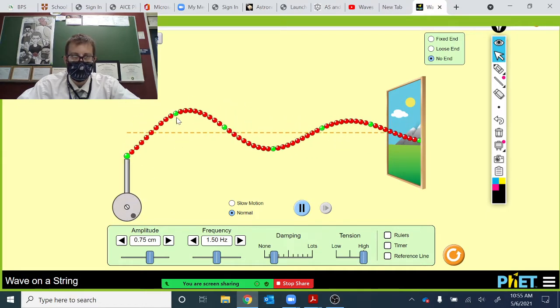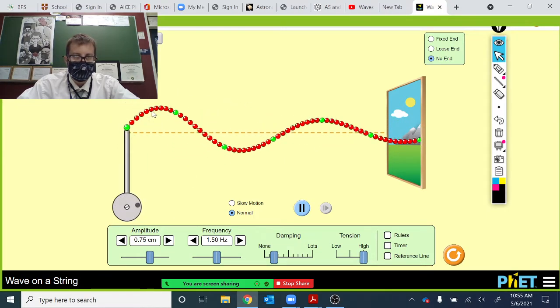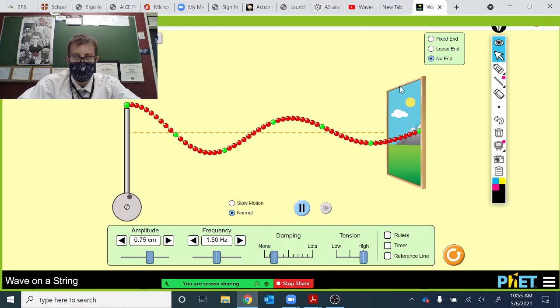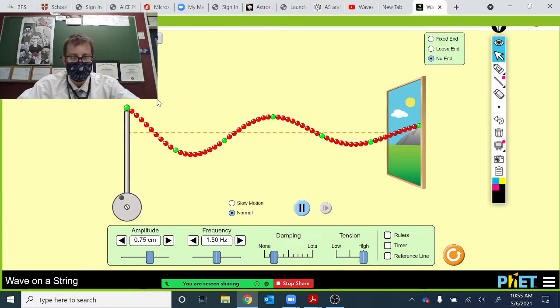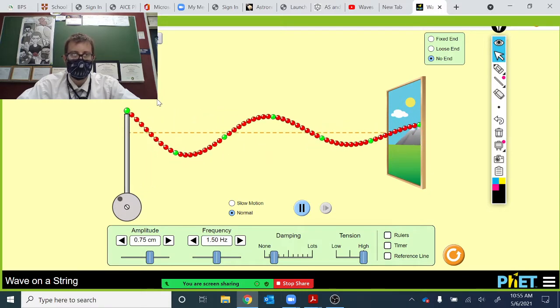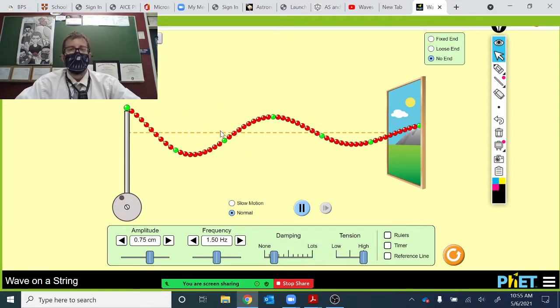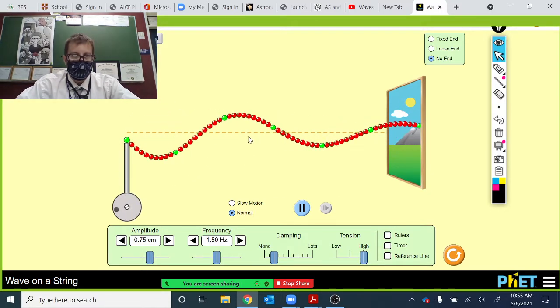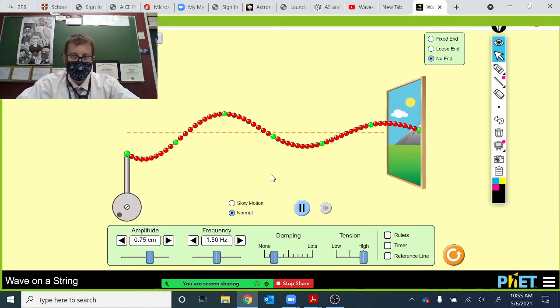We can see that the particles are moving up and down as the energy is transferred from left to right. That's an example of a transverse wave where the particles are moving at right angles or perpendicular to the direction of energy transfer.